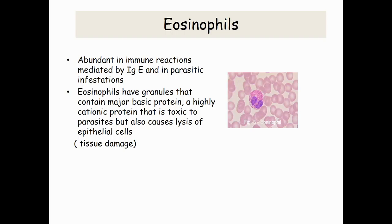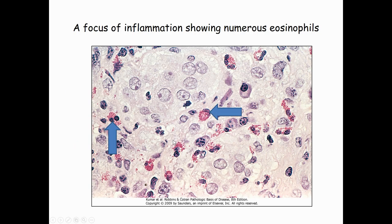This is the eosinophil. Eosinophils have granules inside the cytoplasm. They contain the major basic protein, which is very toxic to parasites but also causes lysis of epithelial cells. Here we can see a focus of inflammation showing numerous eosinophils.